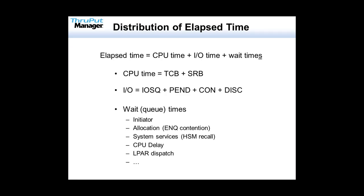Let's look at what we call the distribution of elapsed time for an application — this can be a batch job, a transaction, any unit of work running in z/OS or really any computer system. The principles are not that different. Your total elapsed time is going to be the combination of your total CPU time, the total IO time — how long it took to read and write from disk or tape — and the total wait times, such as waiting for the CPU because it's too busy, or waiting for disk because it's in use.